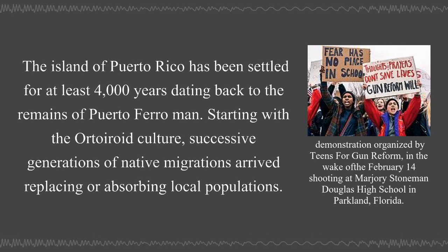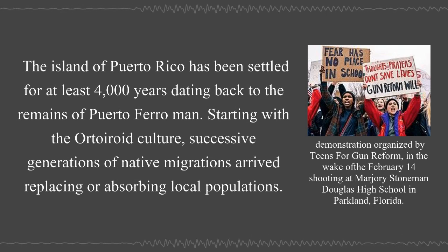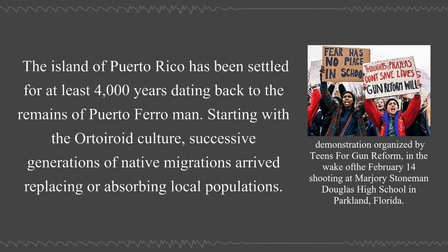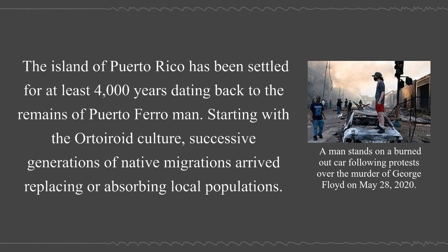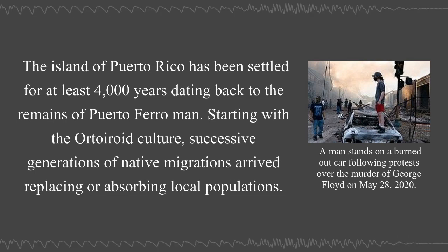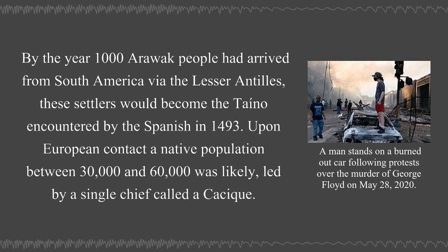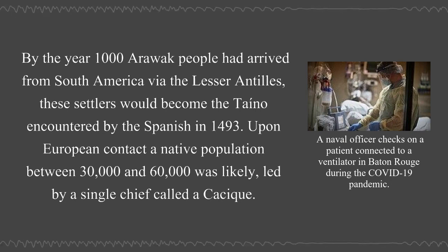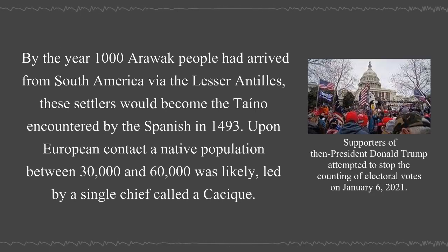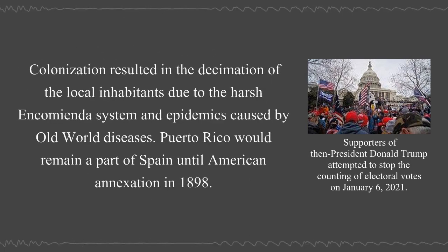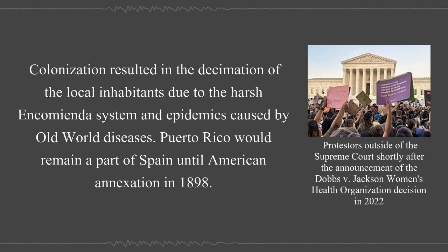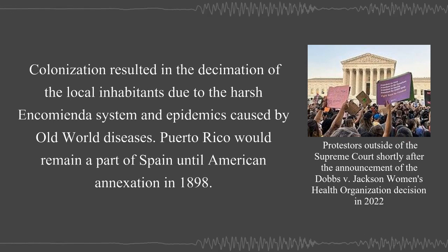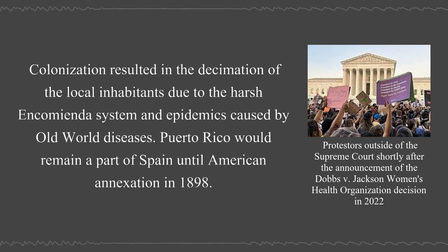The island of Puerto Rico has been settled for at least 4,000 years, dating back to the remains of Puerto Ferro man. Starting with the Ortoiroid culture, successive generations of native migrations arrived, replacing or absorbing local populations. By the year 1000, Arawak people had arrived from South America via the Lesser Antilles. These settlers would become the Taino encountered by the Spanish in 1493. Upon European contact, a native population between 30,000 and 60,000 was likely, led by a single chief called a cacique. Colonization resulted in the decimation of the local inhabitants due to the harsh encomienda system and epidemics caused by Old World diseases. Puerto Rico would remain a part of Spain until American annexation in 1898.